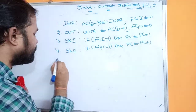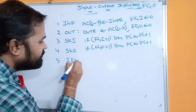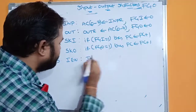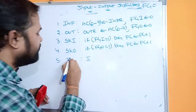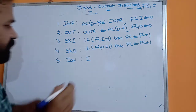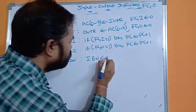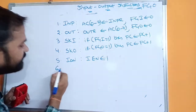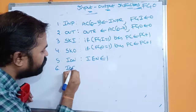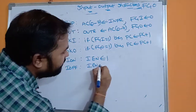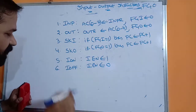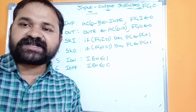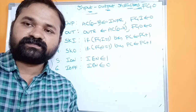The next instruction is ION — ION stands for Interrupt Enable On. When this instruction executes, IEN is set to 1, which enables the interrupt flag. The last instruction is IOF — Interrupt Enable Off. When IOF executes, IEN is cleared to 0 and the interrupt is turned off. These two instructions are used when handling interrupt-related operations. These are the various input/output instructions available in the computer.